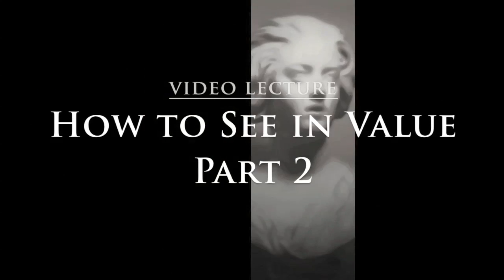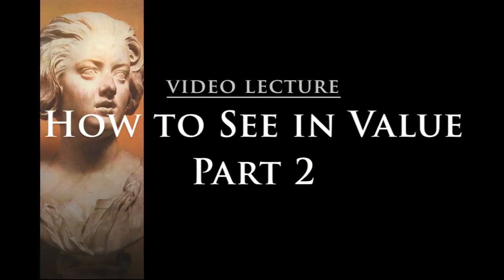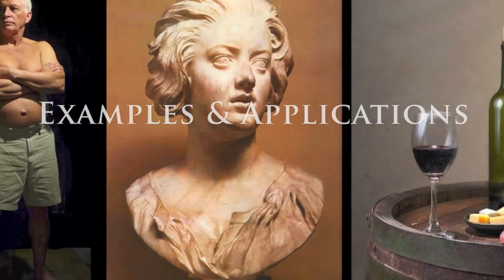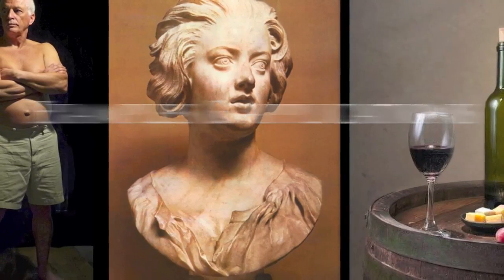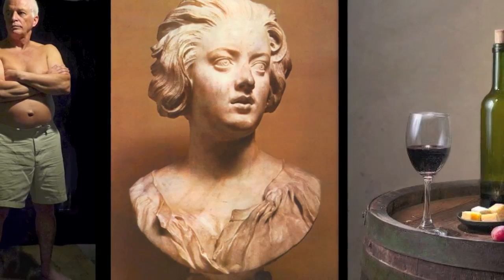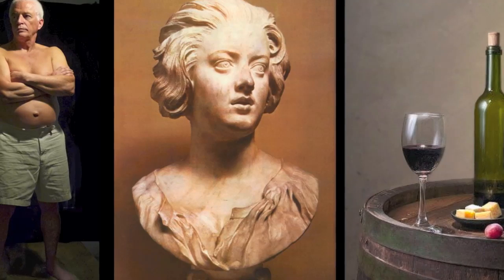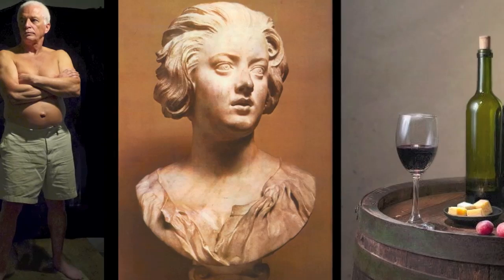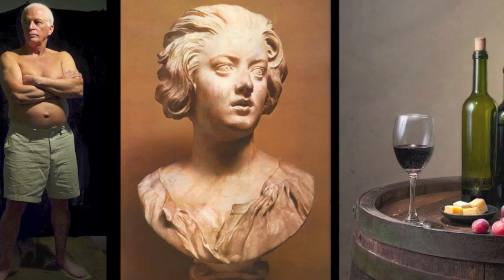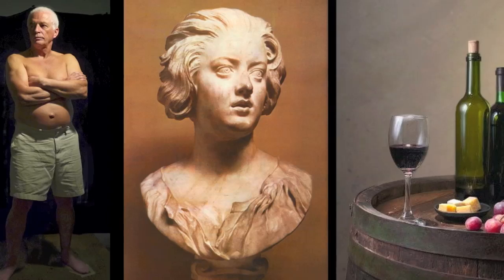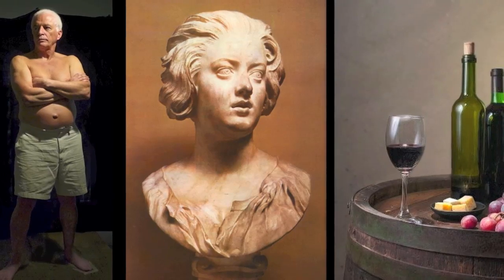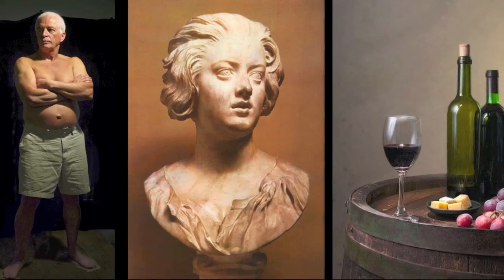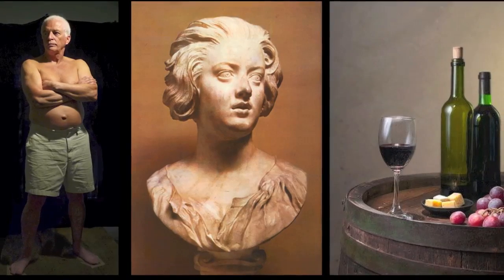Hello and welcome to How to See in Value Part 2. Today we're going to talk about some examples and applications. In the last video, we talked about the principles and concepts of value observation and showed some of the techniques and strategies we use in making value observations. In this video, we're going to show how I would make some value judgments from these examples, and you'll hear some of my thought processes as to why I made certain decisions regarding the value.